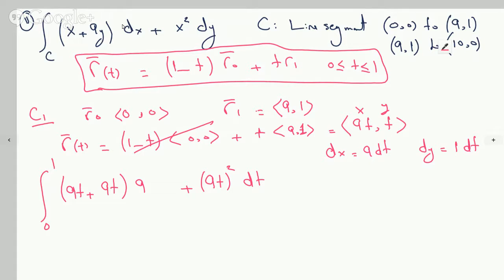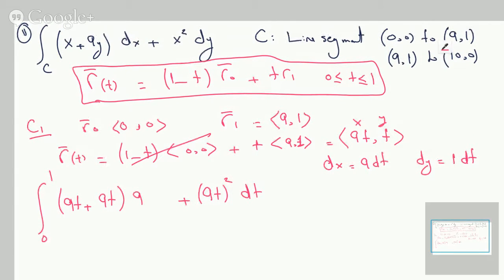If we plugged in the integral, x is 9t, y is t, so 9t plus 9t times dx. dx is the derivative of x, which is 9 dt, and y is t for that position vector. So dy will just be 1 dt. Plug them back in, and this is a very elementary integral. I will assume people who are watching this are at a level where we can skip that kind of algebra or elementary integral calculus 1. The answer here turns out to be 108.